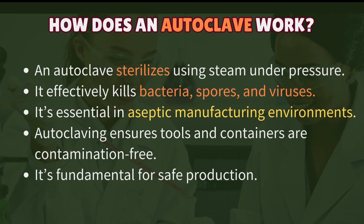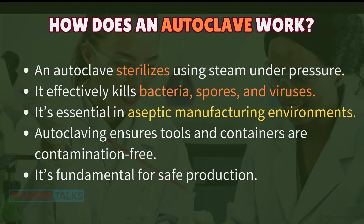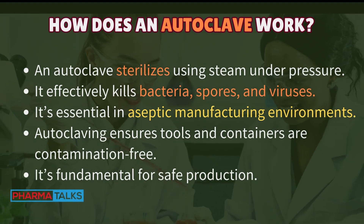How does an autoclave work? An autoclave sterilizes using steam under pressure. It effectively kills bacteria, spores, and viruses. It's essential in aseptic manufacturing environments. Autoclaving ensures tools and containers are contamination-free. It's fundamental for safe production.